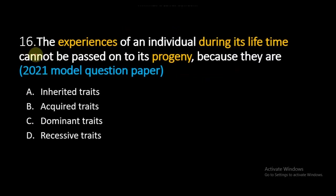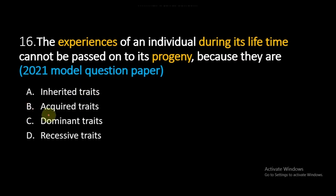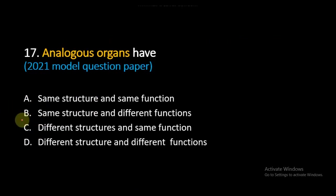Question number 16, also asked in the 2021 model question paper: The experience of an individual during its lifetime cannot be passed on to its progeny because they are — Option A: inherited traits, Option B: acquired traits, Option C: dominant traits, Option D: recessive traits. Only hereditary characteristics can pass from one generation to the next and are called inherited traits. Acquired characteristics will not pass on, so option B is the right answer.